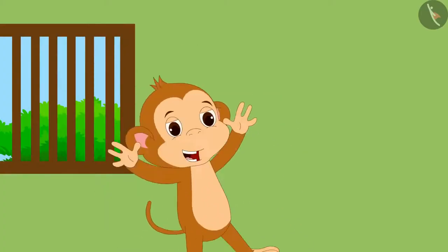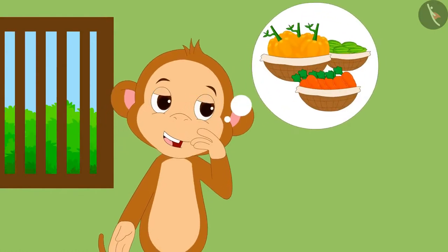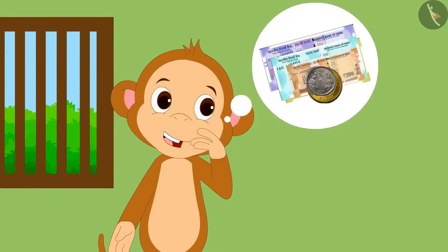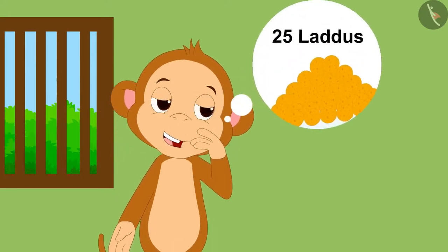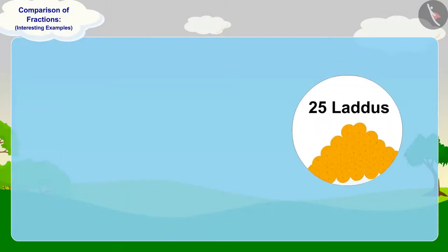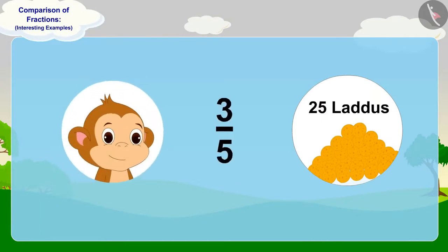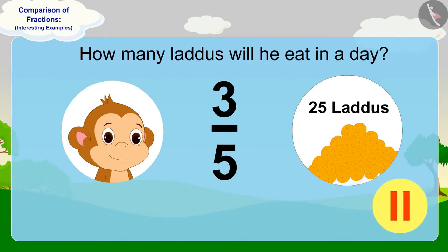Babban became happier thinking about all this. Now Babban is thinking that when he sells his vegetables in the market, he will get a lot of money. Out of that money, he will buy 25 laddus. Out of those 25 laddus, he will eat three-fifth of them in a single day. Can you tell how many laddus he will eat in a day? You can find the answer by pausing the video.